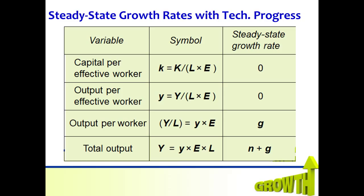Because little y is constant in the steady state, capital E is growing at rate g, and capital L is growing at rate n, total output grows at rate n plus g in the steady state. We now have everything needed to explain how standards of living can increase in a sustained fashion. Technological progress can actually lead to sustained growth in output per worker at a rate of g. By contrast, a high rate of savings leads to a high rate of growth only until the steady state is reached; once in the steady state, the rate of growth of output per worker depends only on the rate of technological progress. According to the Solow model, only technological progress can explain sustained growth and persistently rising living standards.